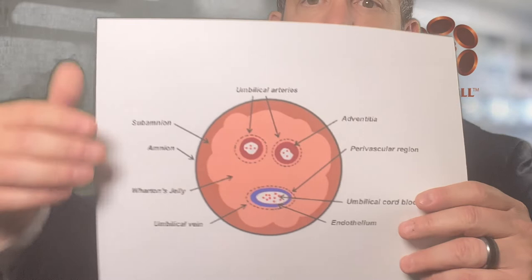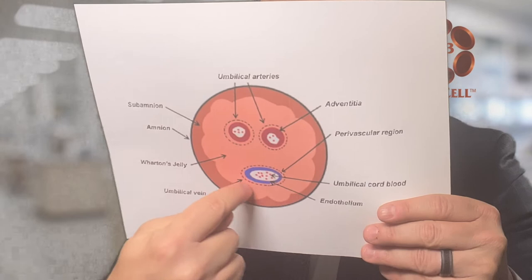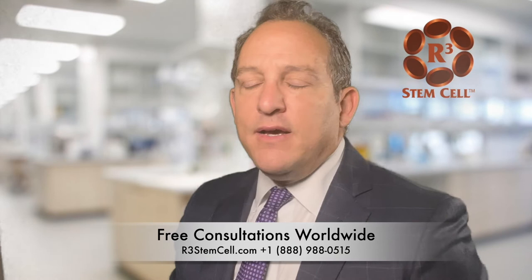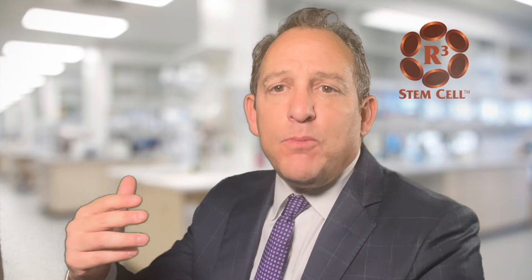In a cross-section — as if you cut right through it — there are actually two arteries and a vein. That's where the blood flow comes to and from the fetus. The area around those blood vessels is called Wharton's Jelly. It's a gelatinous matrix that comprises this area. Interestingly enough, we've found out over the last 10 to 20 years that this area is plentiful with growth factors, cytokines, stem cells, and exosomes. It's amazing what that area contains that is helpful for regenerative therapies.